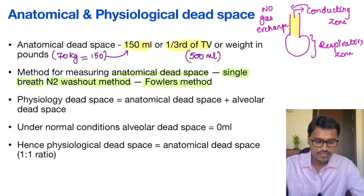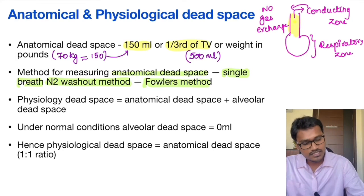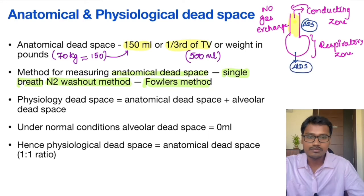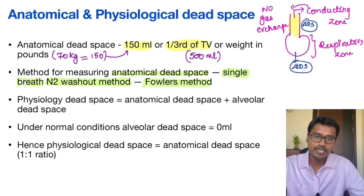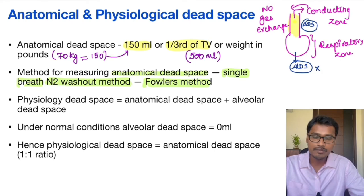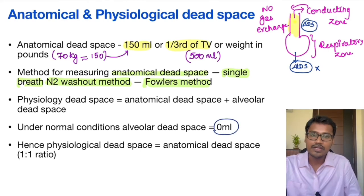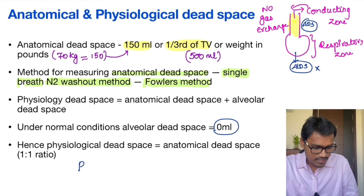Coming to the physiological dead space: physiological dead space means anatomical dead space plus alveolar dead space. Both of these together make up the physiological dead space. Under normal conditions, alveolar dead space is 0 ml, so in a normal subject physiological dead space is equal to the anatomical dead space.